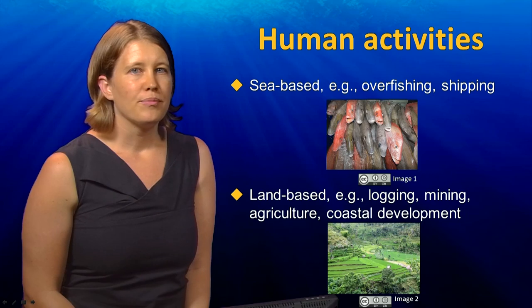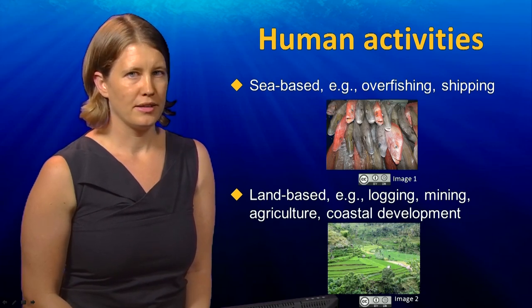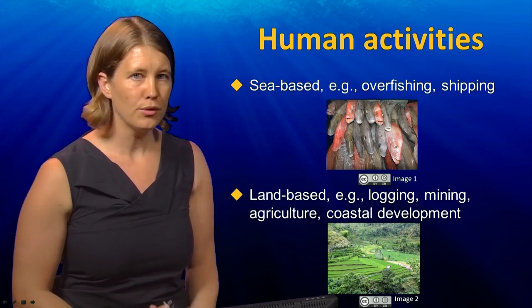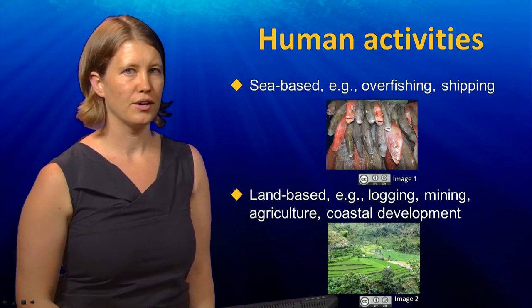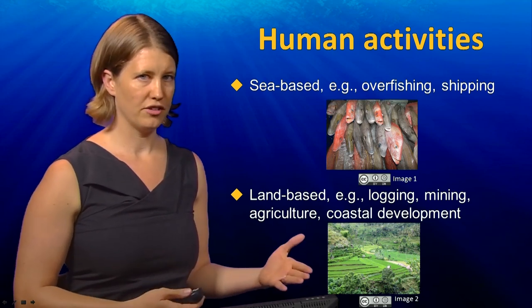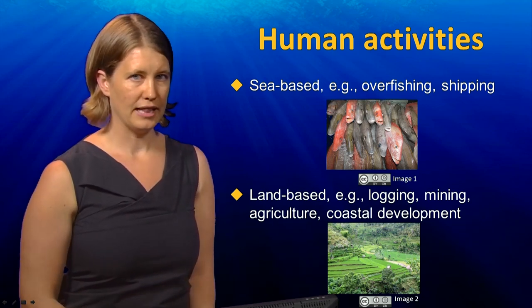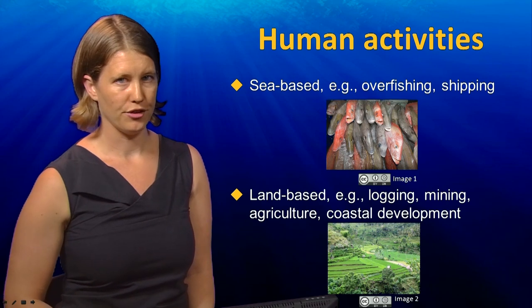As a recap, there are a variety of threats impacting marine ecosystems, most of which are due to human activities occurring on the sea, like overfishing, and on the land, like logging and agriculture.